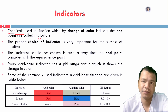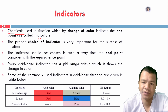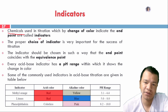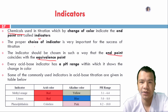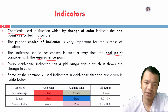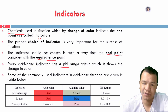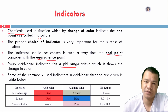If we are using the acid-base titration, we are using the proper indicator. We are using an equivalence point to find the endpoint. When we are using the pH range, the pH range gives the perfect color change.